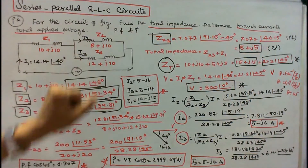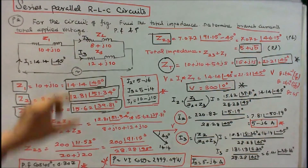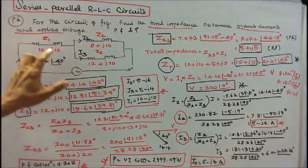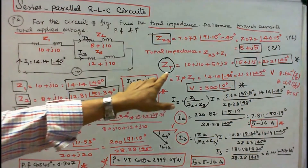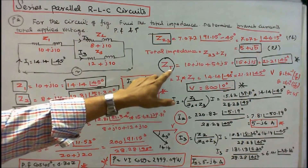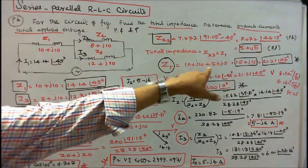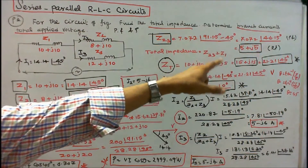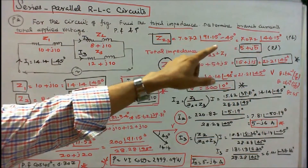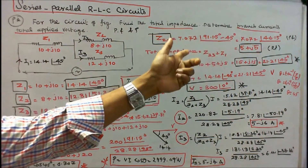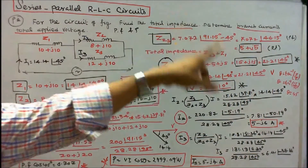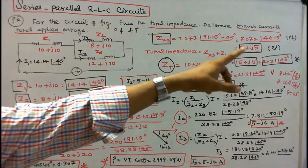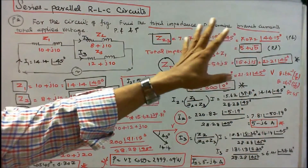The total impedance is this equivalent impedance plus Z1: total impedance = (10 + j10) + (5 + j5) = 15 + j15 in rectangular form, or 21.21∠45° ohms in polar form.